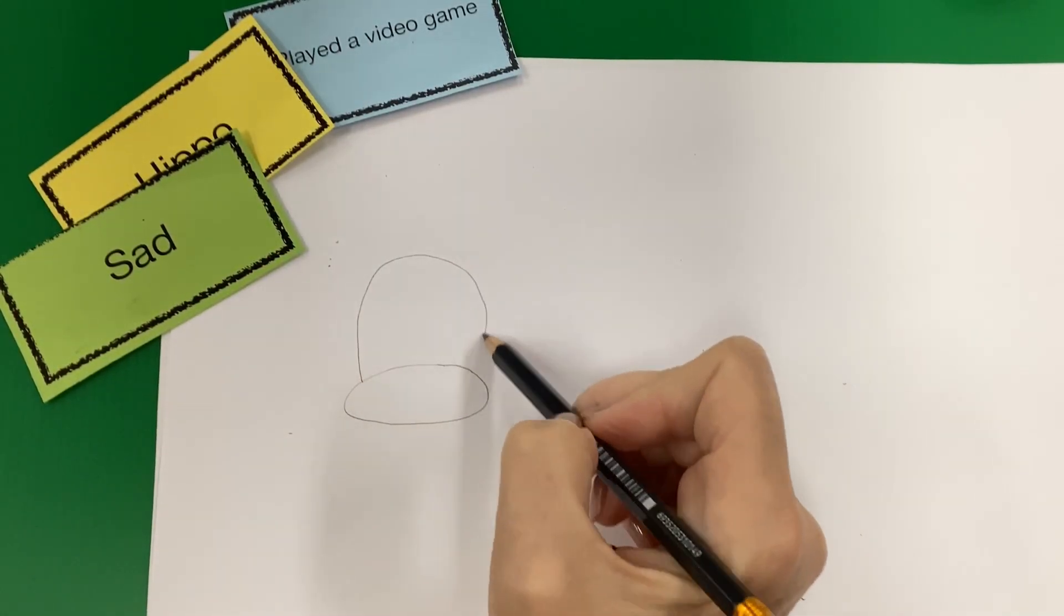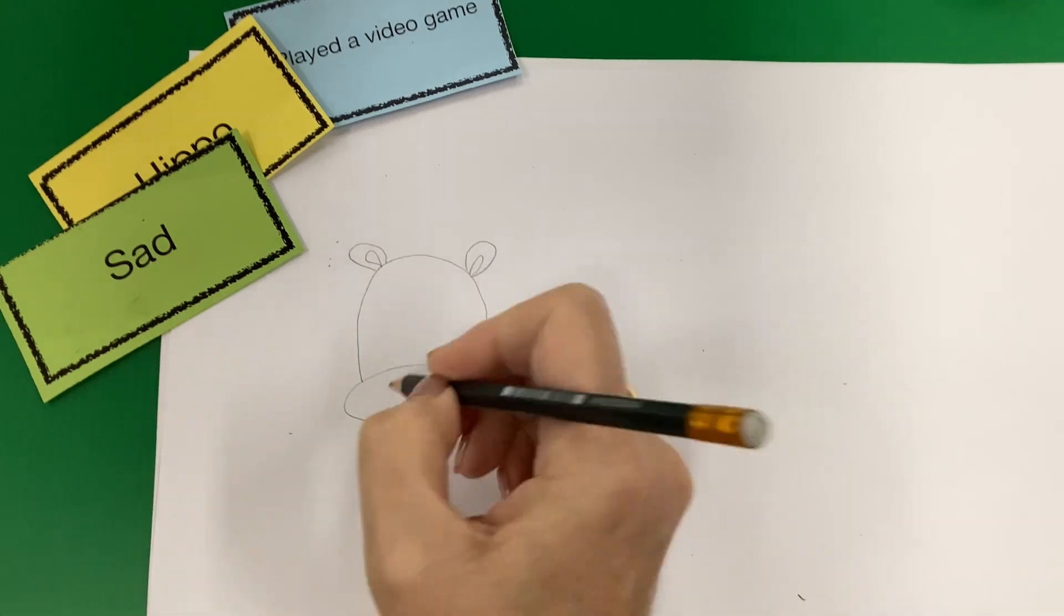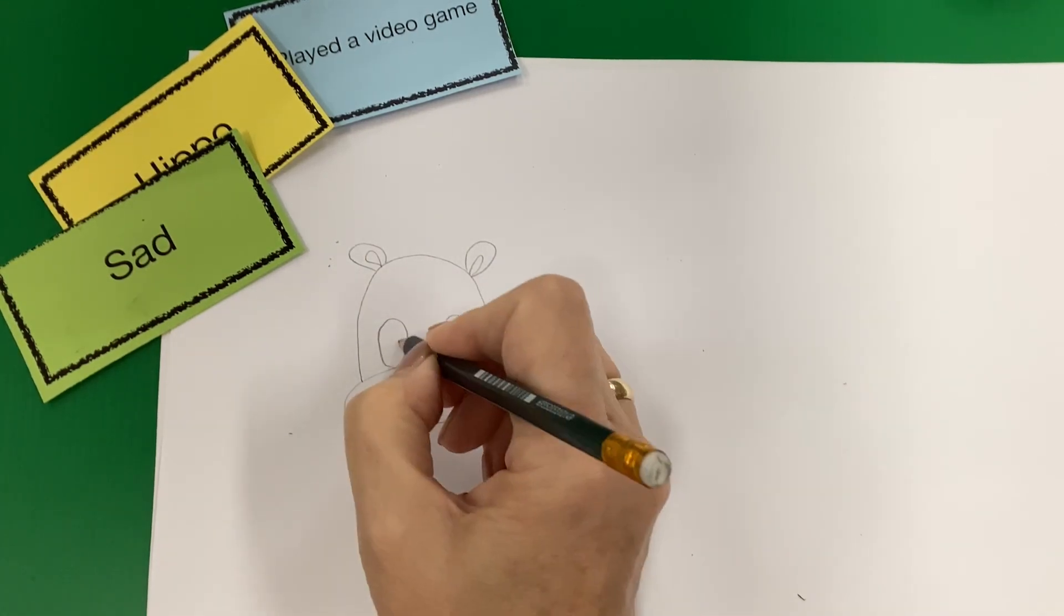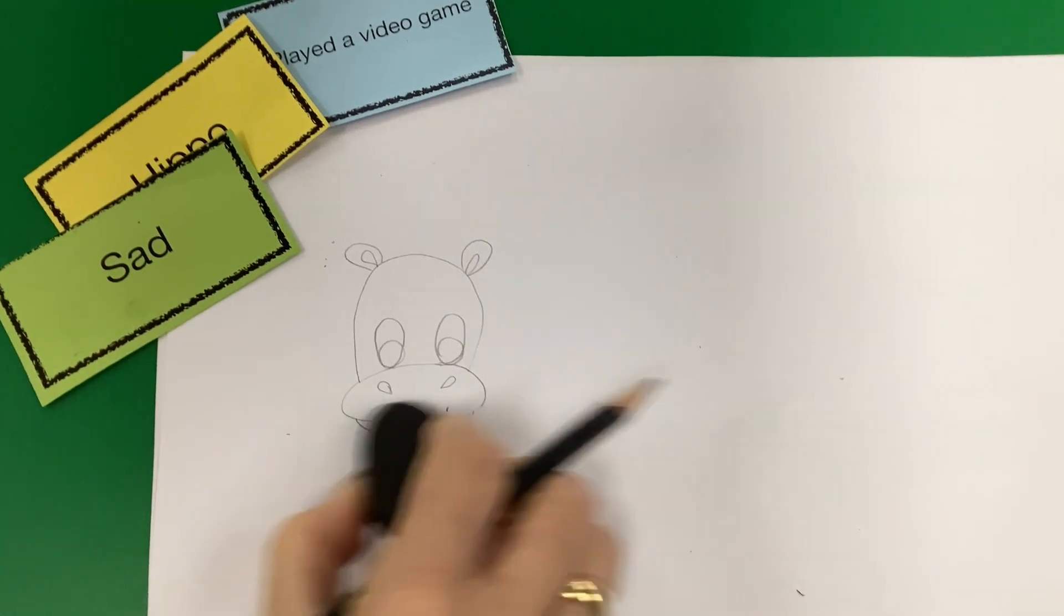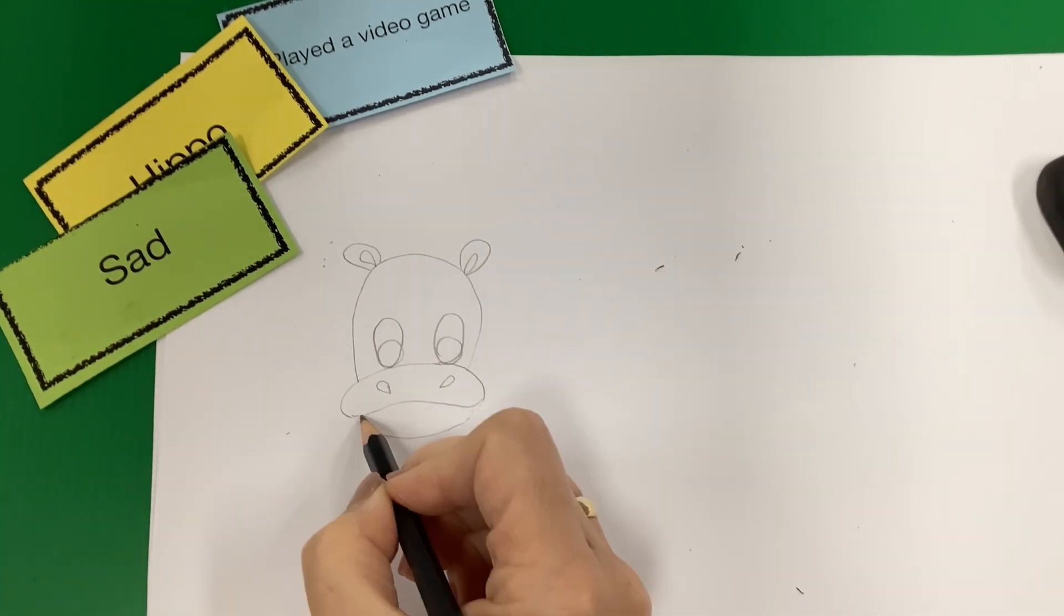So I'm going to start by drawing a hippo and it's kind of a cartoony hippo. It doesn't look particularly realistic, but that's okay. So I'm going to do that. Oh, he looks a little bit too happy. So I'm going to make him a little sadder there.